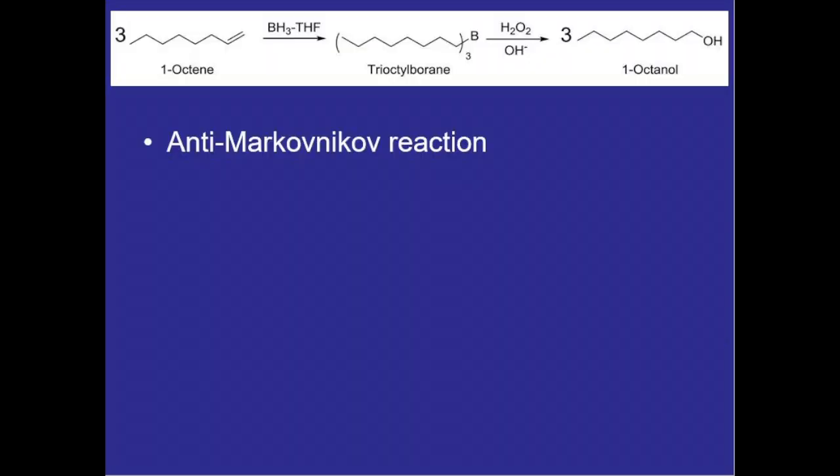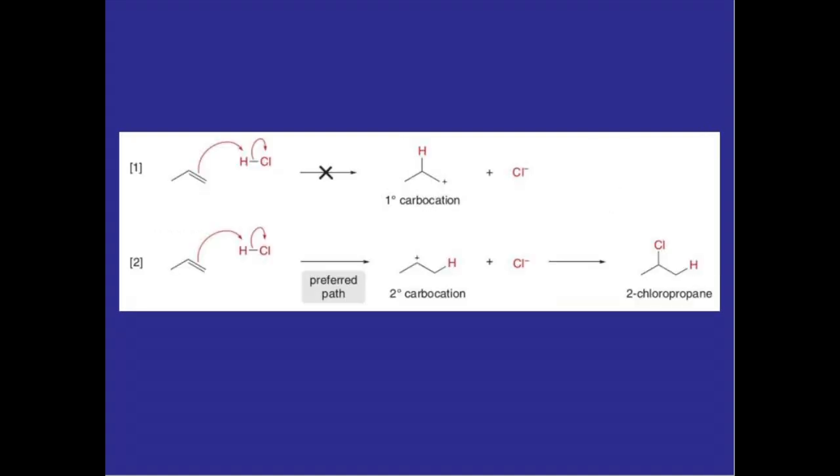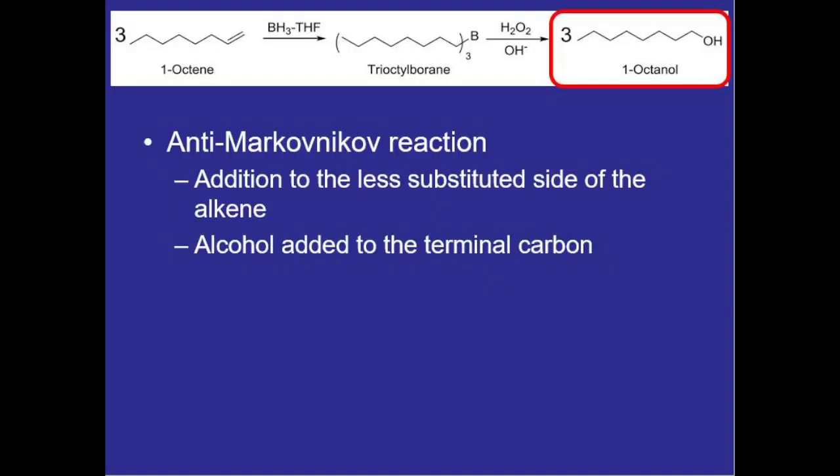The hydroboration oxidation reaction is an anti-Markovnikov reaction meaning that the group that we are adding is going to be added to the less substituted side of the alkene. Usually in reactions we have a Markovnikov reaction where the group we are adding is being placed onto the more substituted carbon and that just has to do with the carbocation intermediate. It's more stable for that positive charge to be placed on a more substituted carbon so the group is added to that more substituted carbon but in our reaction we are placing the alcohol on the terminal carbon and that just has to do with how the borane interacts with the alkene and then gets substituted with the hydrogen peroxide.